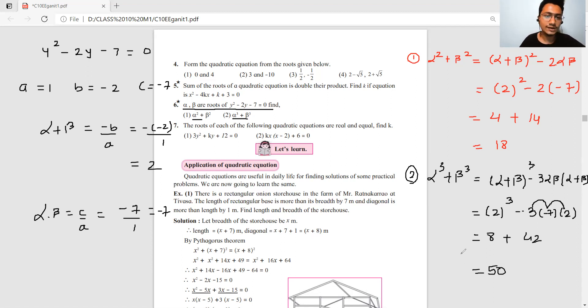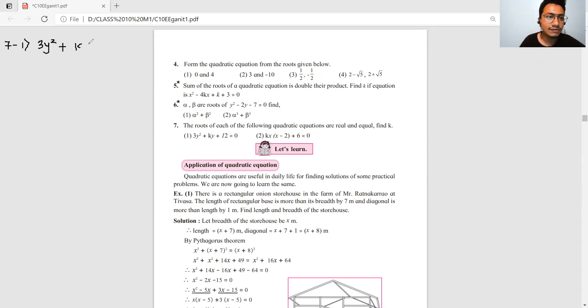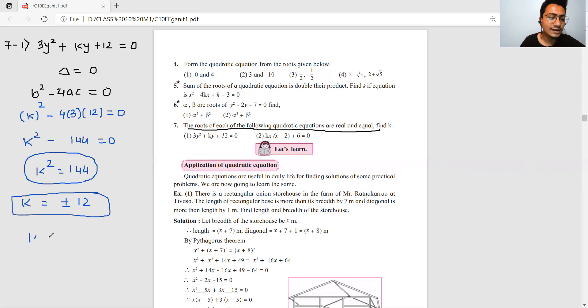Now question number 7, the last question. The equation is 3y square plus ky plus 12 equals zero. The roots of this quadratic equation are equal. What is the delta value? The formula for delta is b square minus 4ac equals zero. Comparing directly, k square minus 4 multiply with a value 3 and c value 12. So k square minus 144 equals zero. The answer is k equals plus or minus 12.